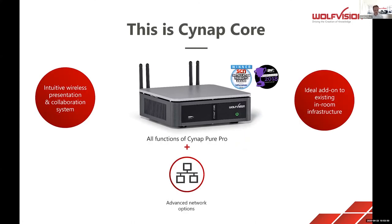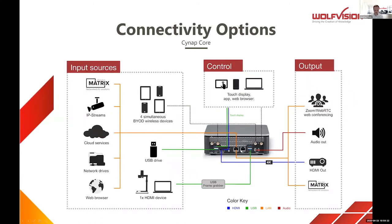Moving up the range to Cynap Core — it has all the functionality of the Pure Pro in a slightly different form factor, with dedicated Miracast antenna areas on the back of the unit, advanced networking options, and it forms a core part of our vSolution Matrix. A notable feature is the ability to add additional HDMI inputs using our approved Magwell accessory on the Pure Pro, Core, and main Cynap, giving you more input flexibility.